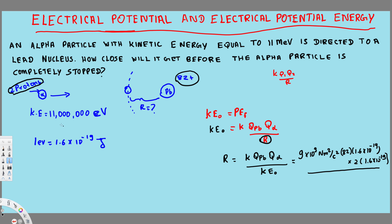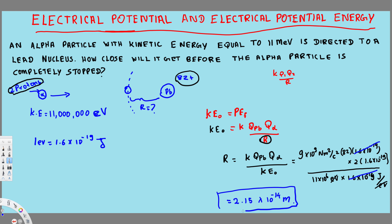The electron volts cancel out and we get units in joules. Also notice we have 1.6 × 10⁻¹⁹ in both the top and bottom, so those cancel. After calculating all these values, you end up with r = 2.15 × 10⁻¹⁴ meters, and that is our final answer. I hope you guys liked this video — see you next time!